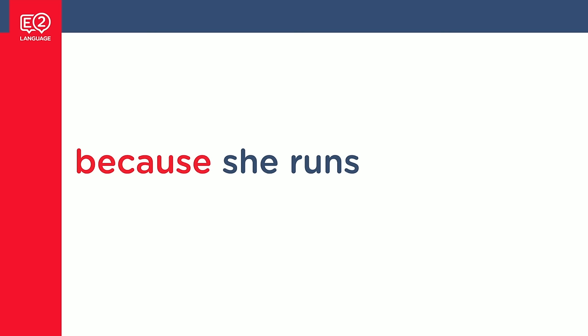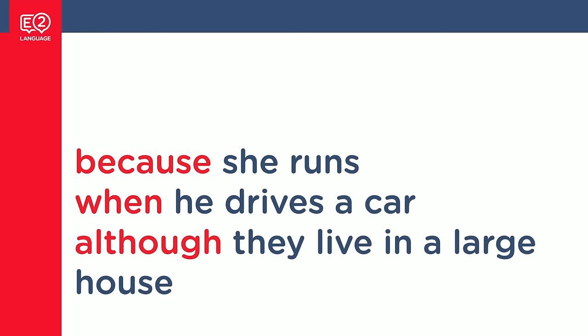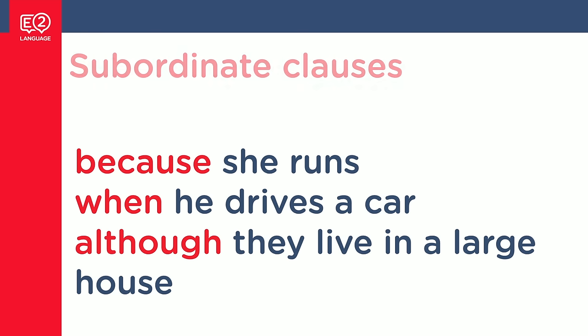There are other clauses like this: 'Because she runs.' 'When he drives a car.' 'Although they live in a large house.' Again, we've got a subject and a verb, but here we've got an extra word — because, when, although. And now the sentences, well, they're not really sentences. They don't make sense. These are subordinate clauses — there's a subject and a verb and another word, a subordinating conjunction.